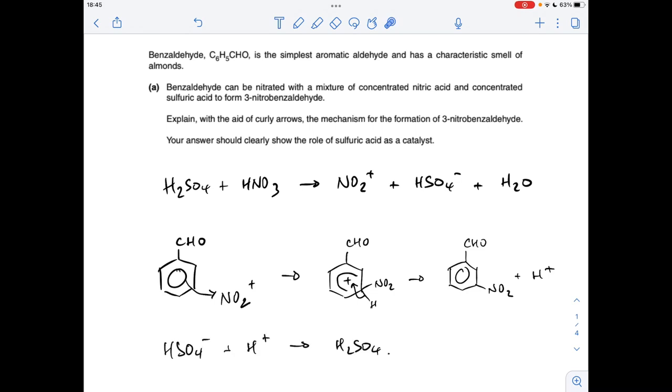So there's our organic product, H+ ion as well from the loss of this H here. The last thing we need to do is show the role of the sulphuric acid as a catalyst. We take the HSO4- ion that was formed in the first step, the H+ ion that's just been removed from the ring, and we get the sulphuric acid back.